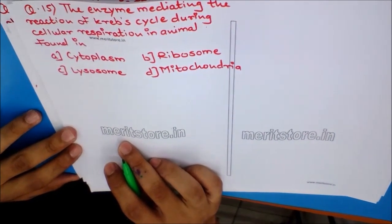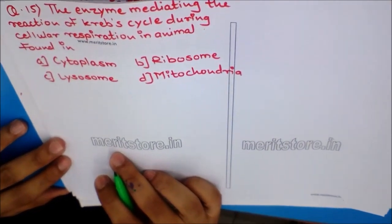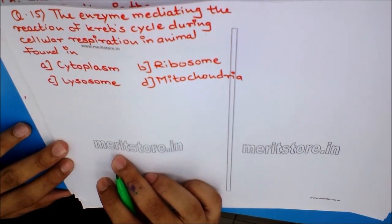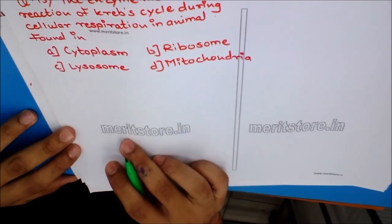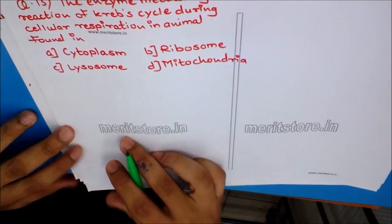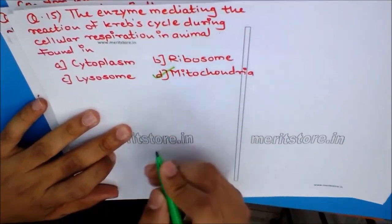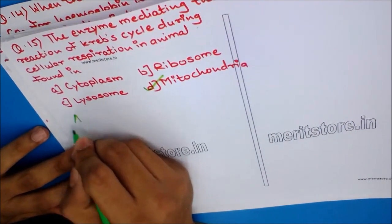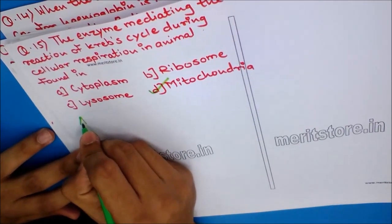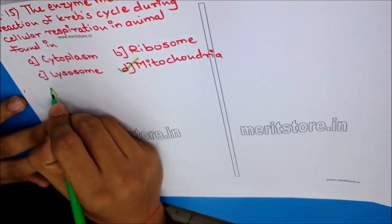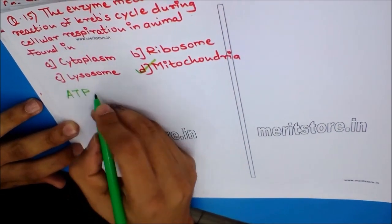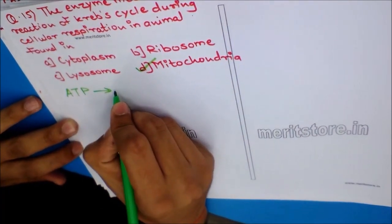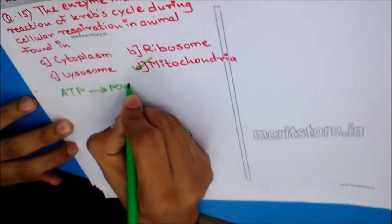Question 15: The enzyme mediating the reactions of the Krebs cycle during cellular respiration in animals is found in? Options: A) Cytoplasm, B) Ribosome, C) Lysosome, D) Mitochondria. The answer is mitochondria. The mitochondria supplies energy in the form of ATP needed for respiratory processes, and is therefore known as the powerhouse of the cell.